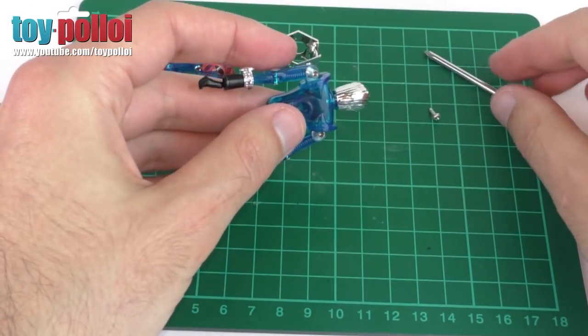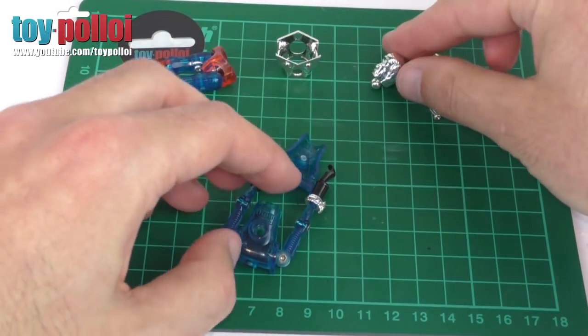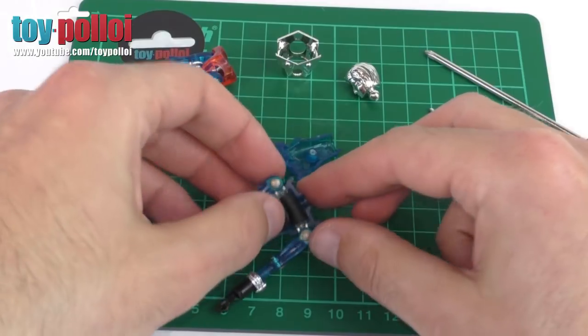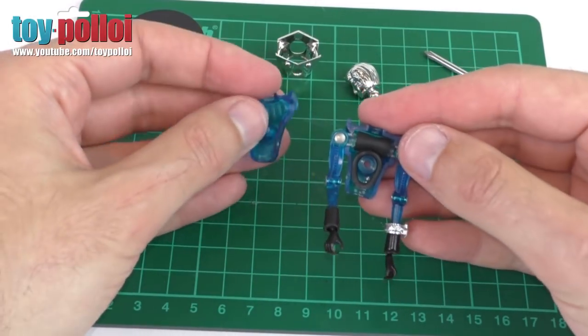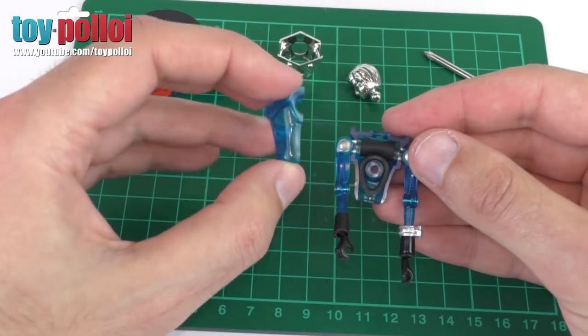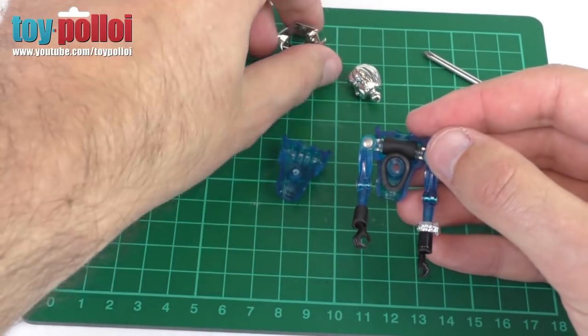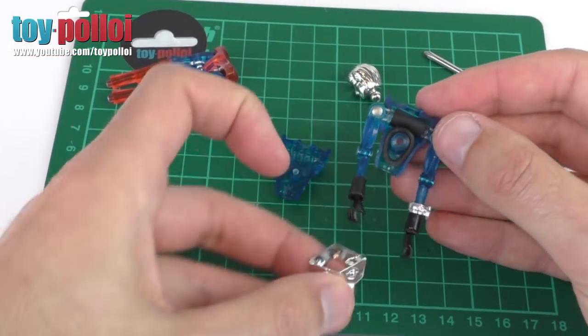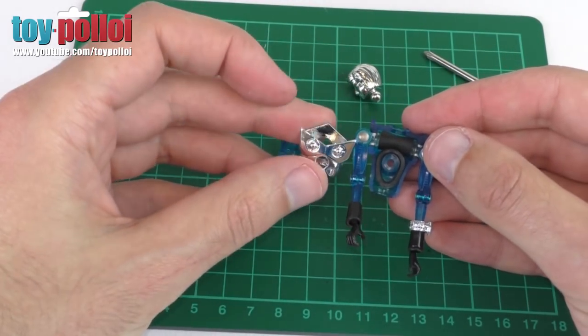Drop the screw out and then we should be able to just pull this front section apart. There you go, it's just falling apart. You can get inside and see how this is constructed. This is exactly the same construction as other Microman and Micronauts figures, just with the added complication of this silver piece, which needs to slot over the body once it's all together.